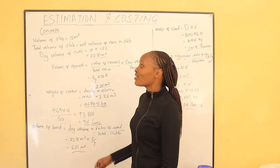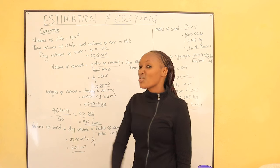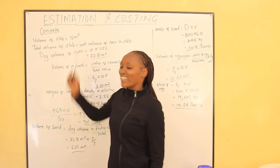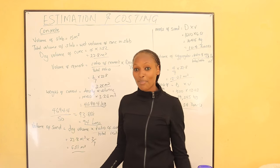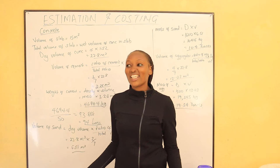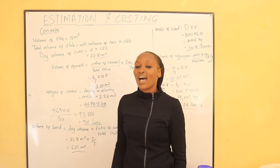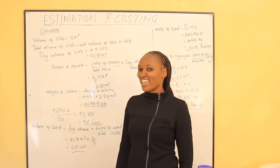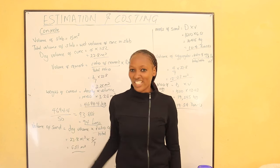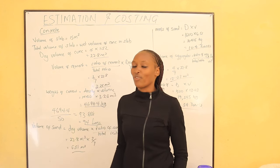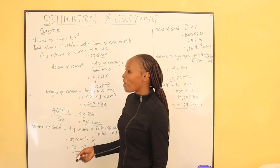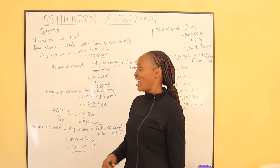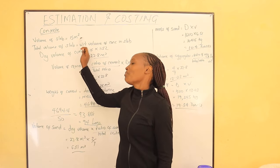In today's video, we shall calculate the quantity of cement, sand, and ballast we shall use when we are constructing a slab. What is a slab? For example, when you're stepping on a ground floor, that is an oversite concrete slab — a ground floor slab. A slab is that mass of concrete placed on the ground to provide the floor. We want to know how many bags of cement, what quantity of sand, and what quantity of ballast we shall require to do a volume of slab which is 15 cubic meters.